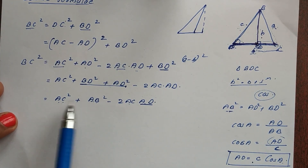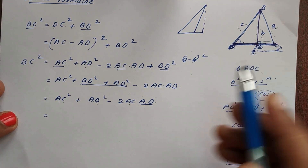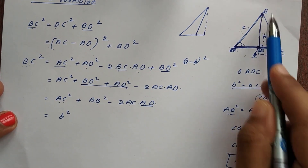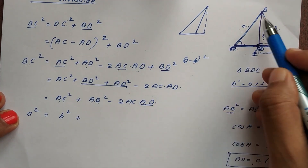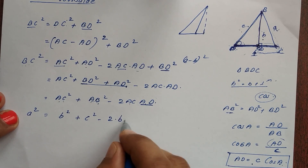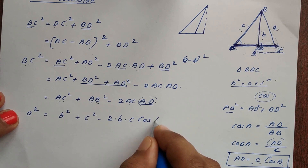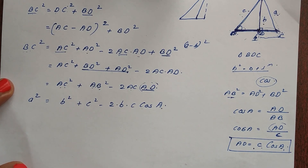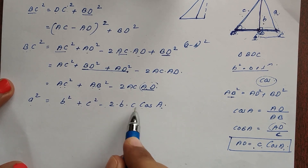So AD = c·cosA. And AC = b. Substituting into our equation, a² = b² + c² − 2·b·c·cosA. So we have the cosine formula: a² = b² + c² − 2bc·cosA.